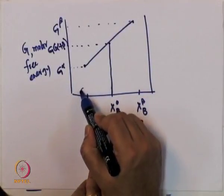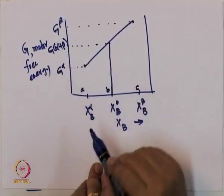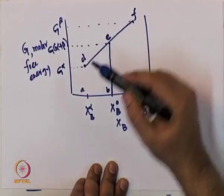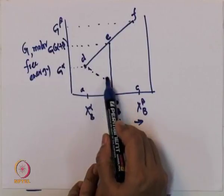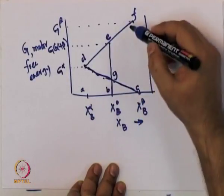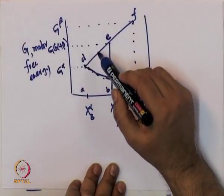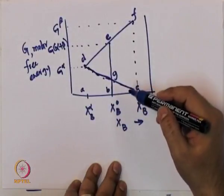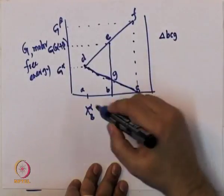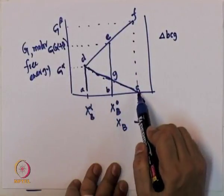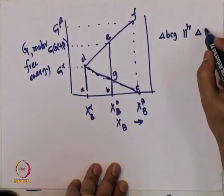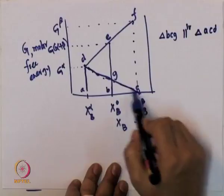To do that, let me mark the points: this point as A, this point as B, this point as C. I am going to mark this point as D, this point as E, and this point as F, and draw a line through G. The triangle BCG is similar to triangle ACD.